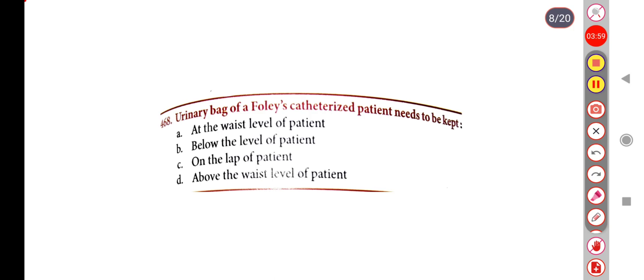Next question. Urinary bag of a catheterized patient needs to be kept — Option A: at the waist level of the patient, Option B: below the level of the patient, Option C: on the left of the patient, Option D: above the waist level of the patient. Correct answer is Option B: below the level of the patient.